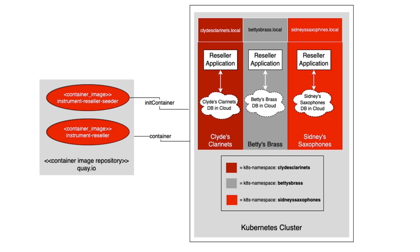For example, Clyde's Clarinets will have clarinet data, Betty's Brass will have brass data, and Sydney's Saxophones will have saxophone data. The second container, called Instrument Reseller, is the actual application code that each tenant will use. Each tenant will have an instance of the application code. The code is generic, but between the specifics of the Instrument Reseller's data and the generic nature of the application logic, we get a distinct tenant for each application running in the cluster.